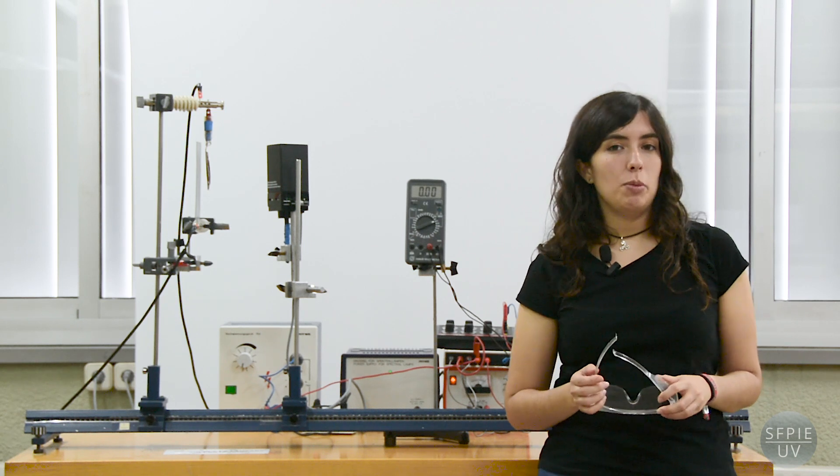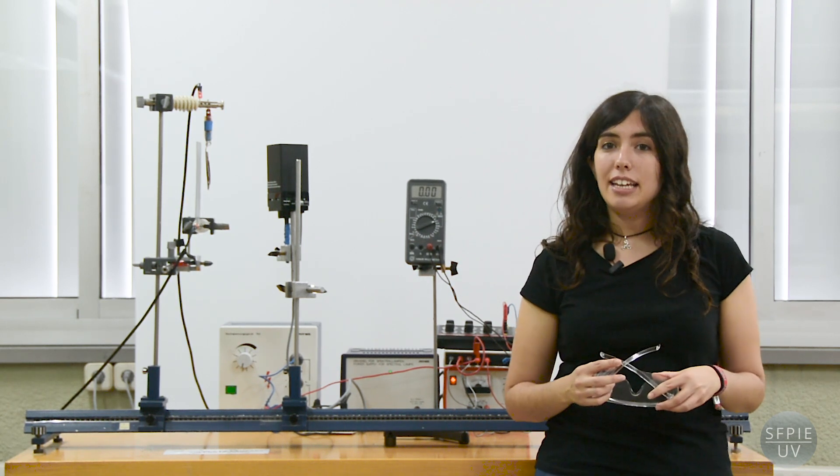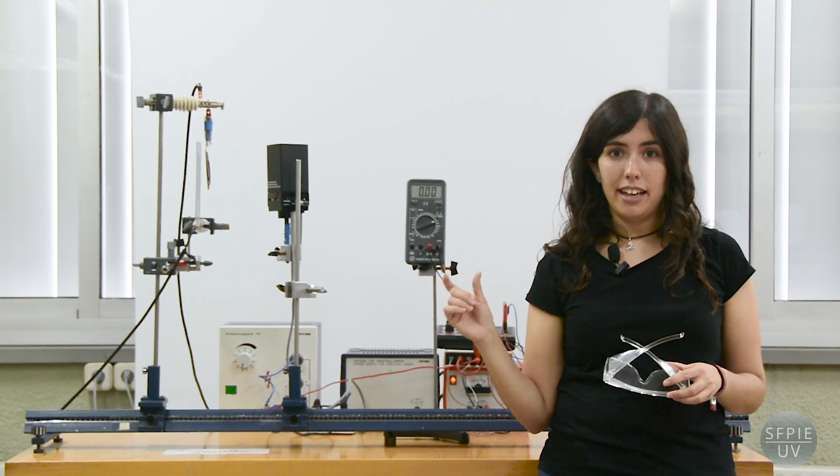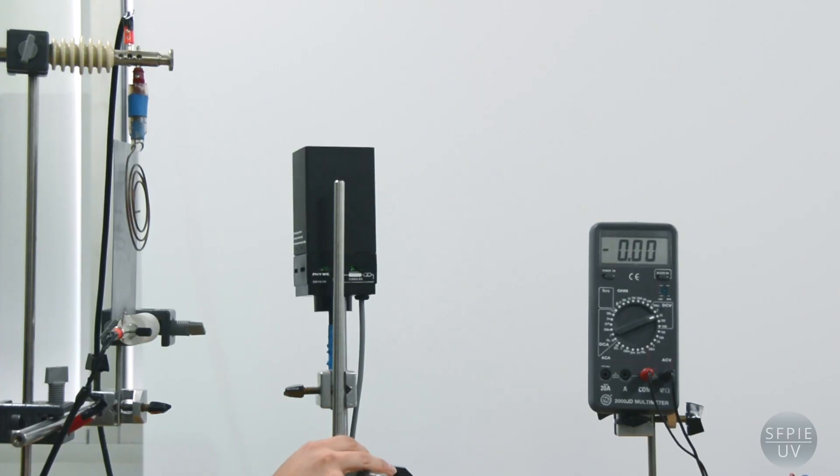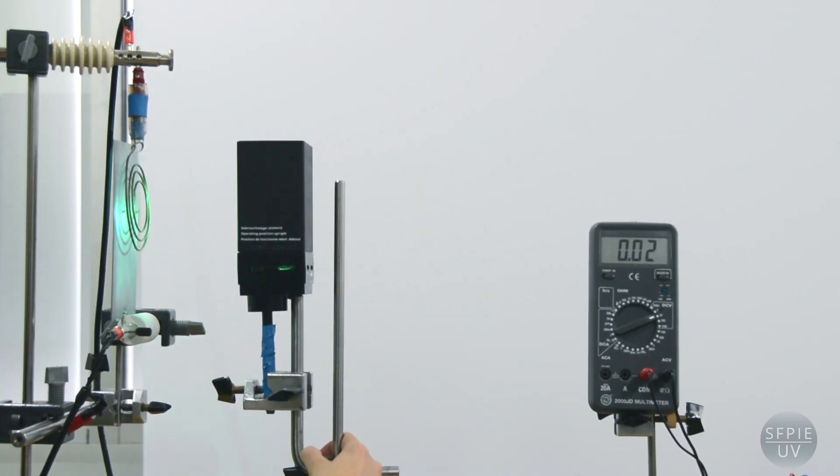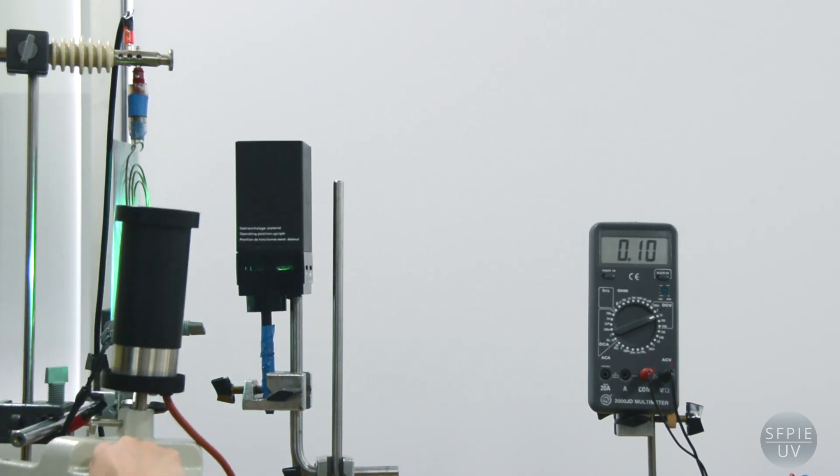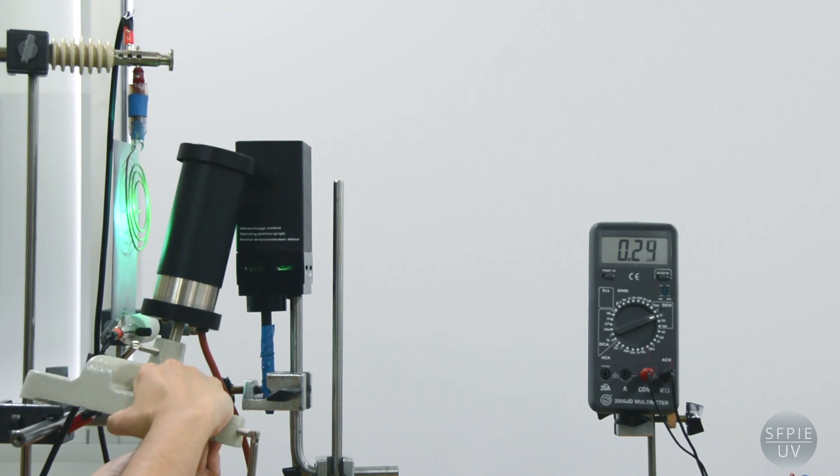This experimental setup also allows us to show another feature of the photoelectric effect. The intensity of the electric current recorded by the multimeter depends on the luminous intensity that reaches the metal plate. To show this, we just need to compare the intensities recorded in the multimeter when we use one, or two ultraviolet lamps. We see that the higher the luminous intensity, the greater the electrical intensity.